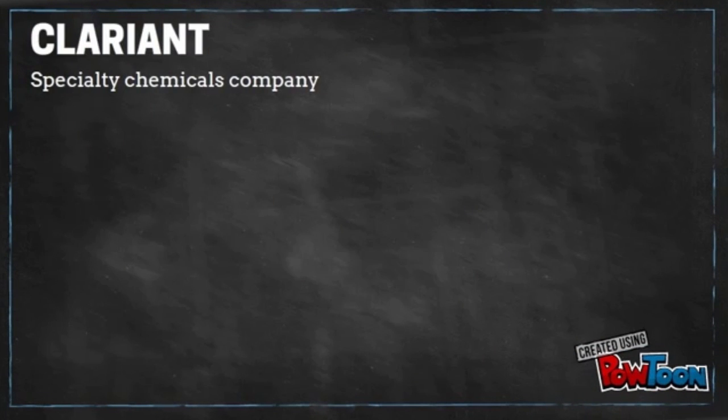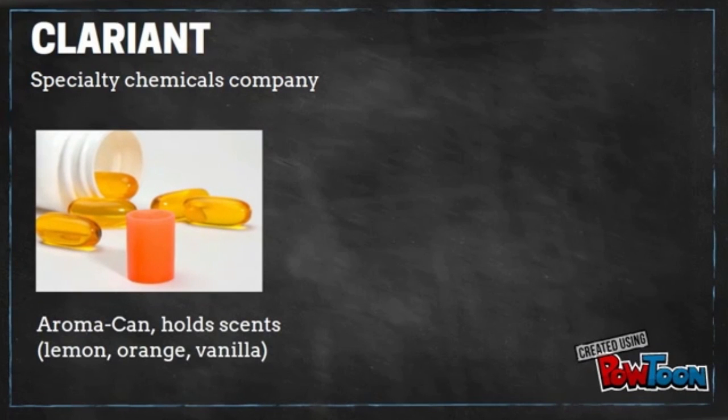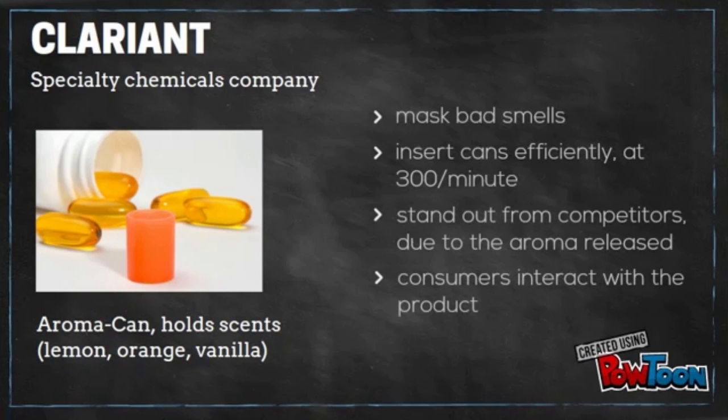The last innovator is Clarion, who is a specialty chemicals company using their packaging division to create new solutions. One example is the Aromacan, which is a canister full of a scent, such as lemon, orange, or vanilla, placed into the packaging. This makes them innovative because they are able to mask the bad smells, insert them efficiently, and keep the packaging the same, but make it stand out from the competitors with the aroma. This shows that they are able to think outside the box and make the customers interact with the product.